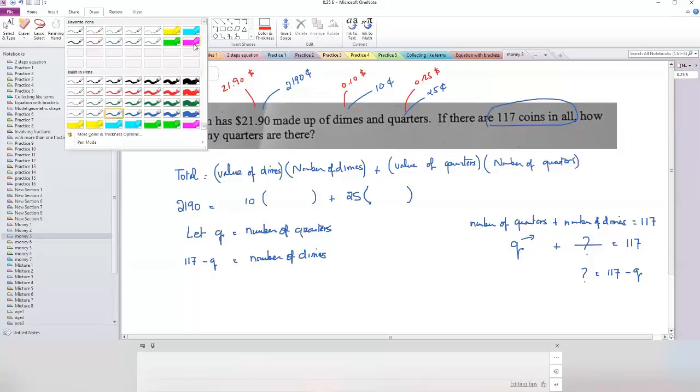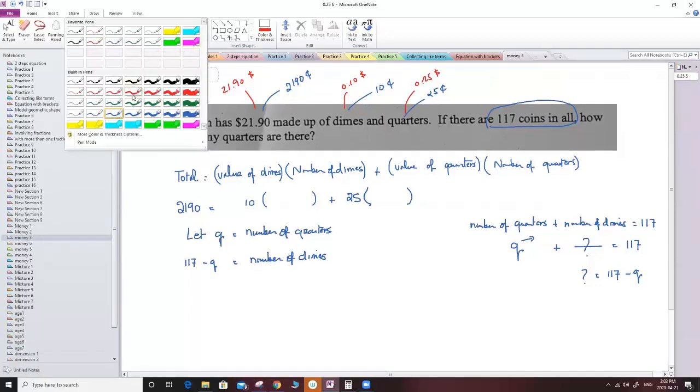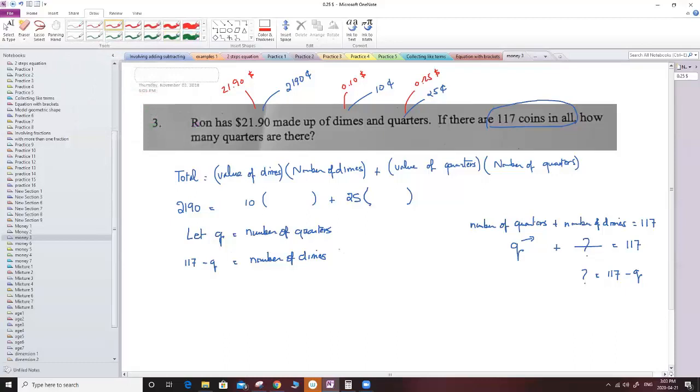I cannot use q for quarters and d for dimes, I cannot. Therefore, I can replace here since 10 is the value of dimes, the number of dimes is going to be 117 minus q, and the 25, this is the value of quarters, so it's going to be q. Now I have only one variable for this equation which is q, and this is correct 100 percent.